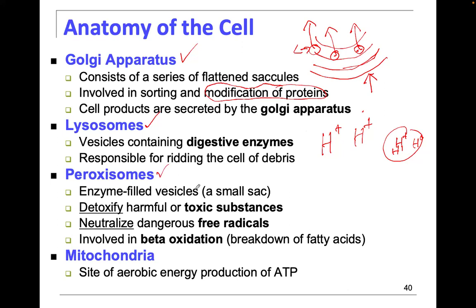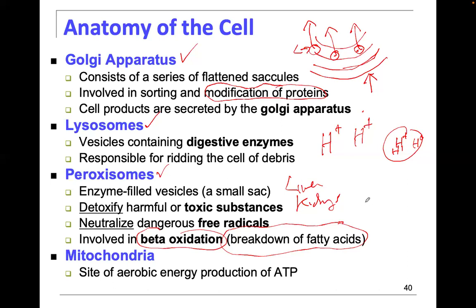Peroxisomes are similar to lysosomes — they're enzyme-filled vesicles — but here they're detoxifying harmful substances and neutralizing dangerous free radicals. They're found in the liver and kidneys where those organs detoxify the body. Peroxisomes are also involved in breaking down fatty acids through a process called beta oxidation. Fats are a long carbon chain, and when we break things down at every two carbons — the second carbon is always beta — that's beta oxidation.